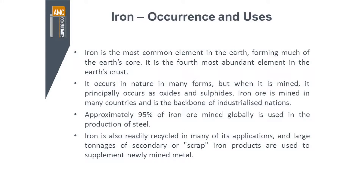It's the most common element in the earth. It forms much of the earth's core, and it's the fourth most abundant element in the earth's crust. So the earth is made up of the core and the outer crust area. Iron is the fourth most common element in the crust, but it's easily the most common element when you take the whole earth. It occurs in nature in very many forms, and many minerals in the earth's crust and core contain some component of iron in their structure. But when we're looking to mine iron ore, it's fundamentally as an oxide and occasionally as a sulphide that we mine it.